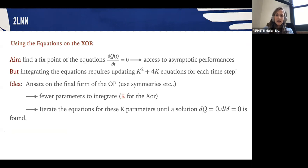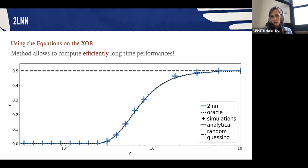The idea is then to say that we have an ansatz for the final order parameters and their final configuration. This ansatz is based on symmetries of the system, for instance, and this allows us to write a system of equations with only k degrees of freedom instead of k squared. Iterating the equations until we find the fixed point allows us to efficiently compute the long-time performances.